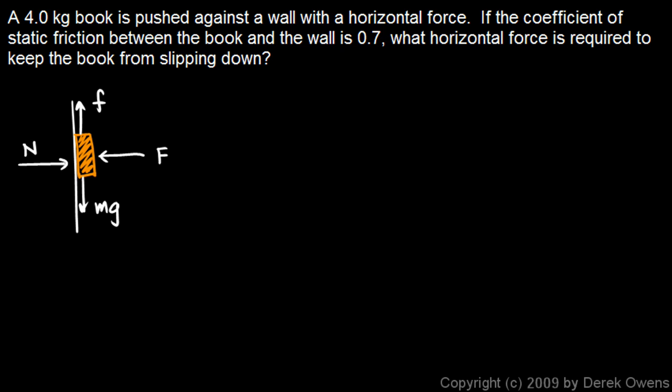So we need to find the horizontal force F here required to hold the book up, the horizontal force required to keep the book from slipping. Now if the book stays still, then the net force is 0. And you should see that if the net force is 0, that this force F has to equal this force N right here. And if it's not slipping, then you should see that the friction is enough to hold it up against the weight, so the friction has to equal the weight.